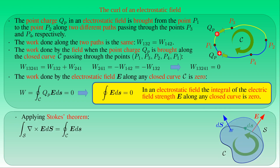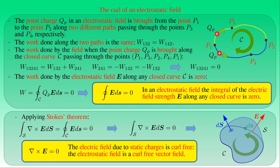By applying Stokes' theorem, the line integral of the electric field strength E along a closed curve C can be expressed as the surface integral of the curl of E over an arbitrary surface S bounded by curve C. Because the line integral vanishes, the surface integral of curl E is zero. Since the surface S is arbitrary, we conclude that the curl of E vanishes. In other words, the electric field due to static charges — the electrostatic field — is a curl-free vector field.